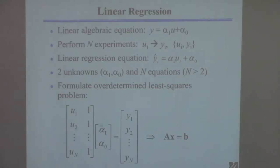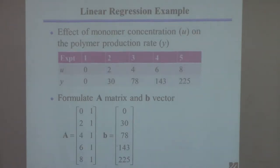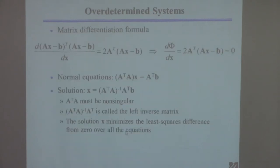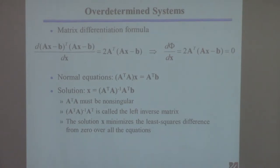So what we want to do is solve this particular problem. There's the A matrix, the unknown vector, and Y. We know everything but the alphas. The answer is the overdetermined least squares formula we already derived — A, X, B — because it's a problem with more equations than unknowns. All you have to do is substitute your A and B into this equation to get the answer.